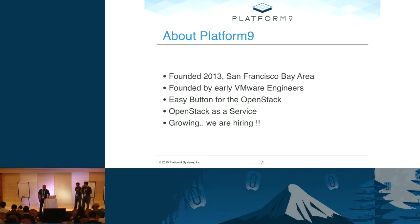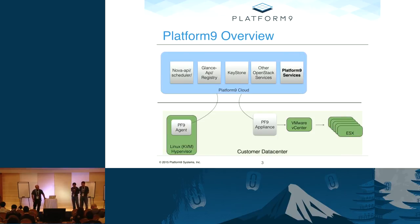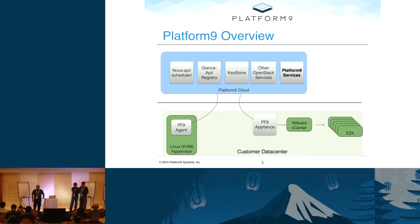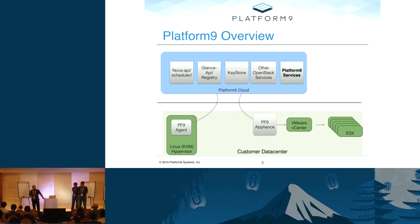We are hiring and based in the San Francisco Bay Area in Sunnyvale, so if you're interested, I'll be here after the session. For a quick architecture overview, we have a Platform 9 cloud at the top running Nova API, scheduler, conductor, Glance API registry, Keystone, and various other OpenStack services, along with Platform 9 services. The green boxes at the bottom represent customer data centers with their hypervisors. On the left, Linux KVM hosts run a Platform 9 agent connecting back to the cloud. On the right, ESX hypervisors with VMware vCenter connect to a Platform 9 appliance — essentially the same agent in appliance form — connecting back to Platform 9 cloud.